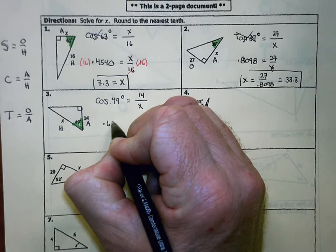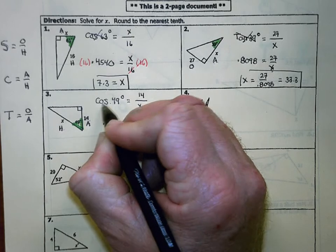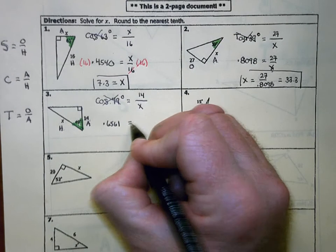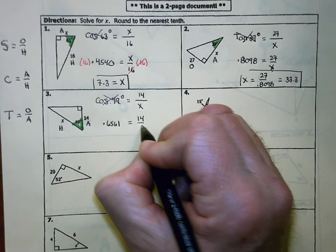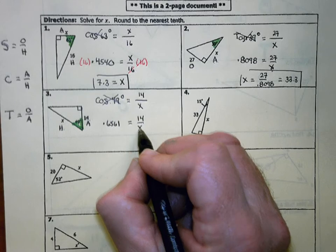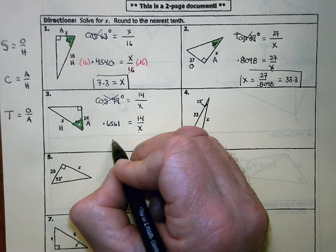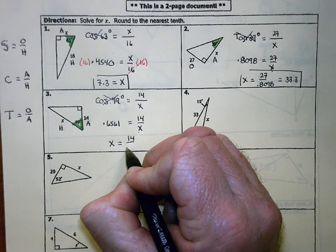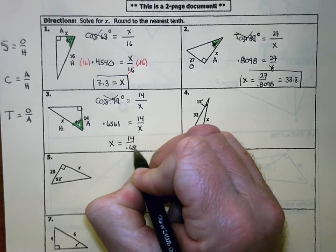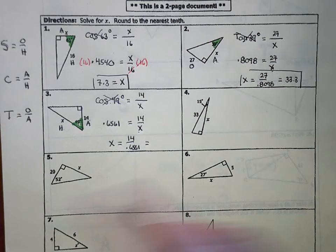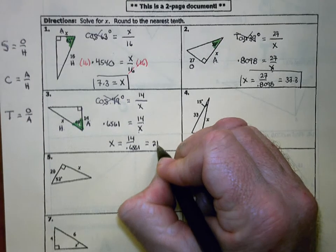The decimal equivalent for cosine 49 degrees is 0.6561. So 0.6561 equals 14 over X. Since X is in the denominator, I switch the values: X equals 14 divided by 0.6561, which rounds to 21.3 for number three.